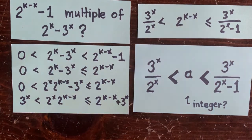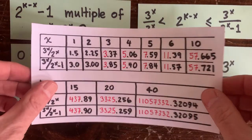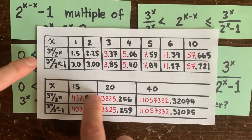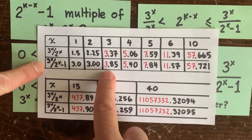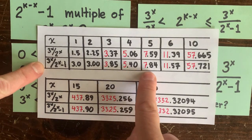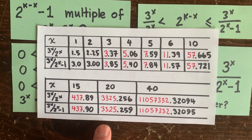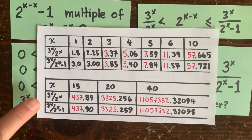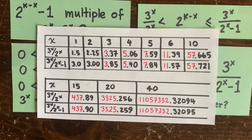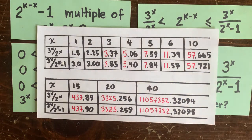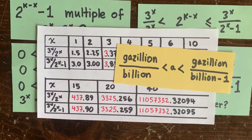So let's look at some values of x. If x is bigger than 2, you could see these two things share the same integer part, like 3 here, 5 here, 7 here, 3,325 here. There's no way to squeeze an integer a in between those two things. And if this keeps up, then we'll know that there are no valid circuit loops. And as x gets bigger, these two things get closer and closer. That's because a gazillion over a billion is about the same as a gazillion over a billion minus 1.